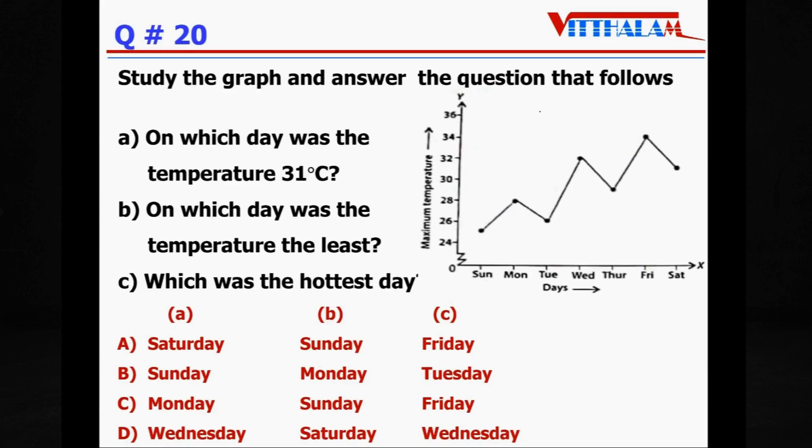Next. Study the graph and answer the questions that follow. So graph is days and minimum temperature in degree Celsius. Here it is Celsius, so obviously this unit will be in Celsius. Fine. So on which day was the temperature 31 degree Celsius? So 31 degree Celsius means here.